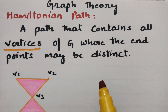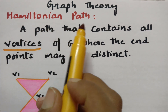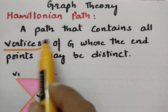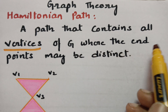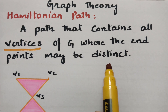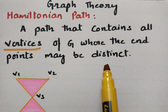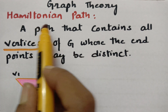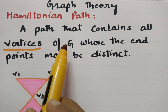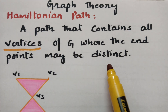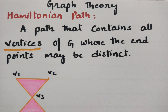In this video I am going to discuss what is Hamiltonian path. A path that contains all the vertices of graph G, where the end points may be distinct. Whereas in the Eulerian path, we talk about the edges of the graph and have to cross each and every edge exactly once. Here in the Hamiltonian path, we have to cross all the vertices of graph G exactly once. The end points may be distinct.